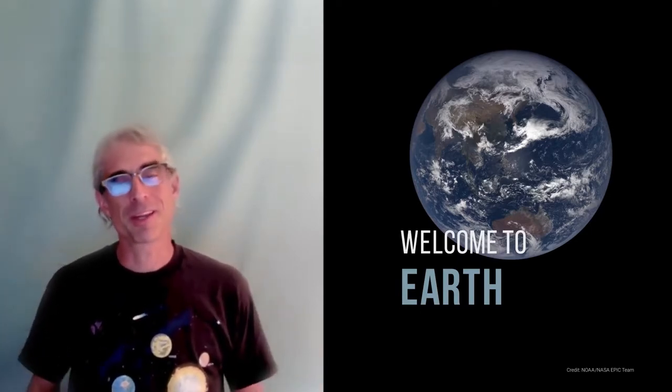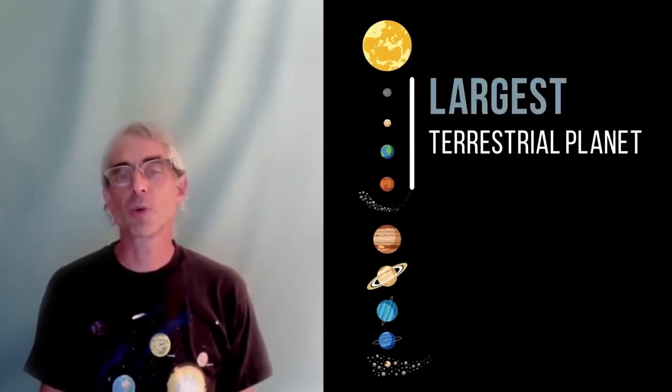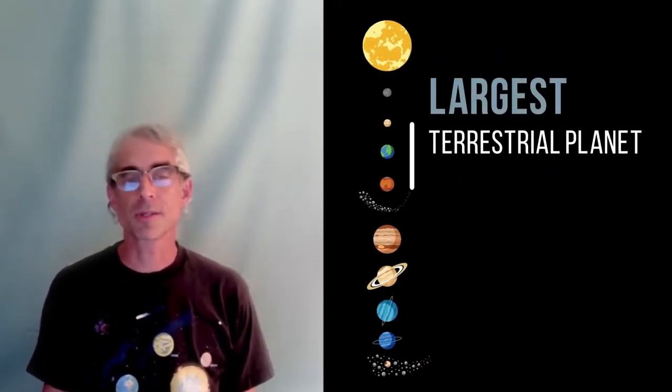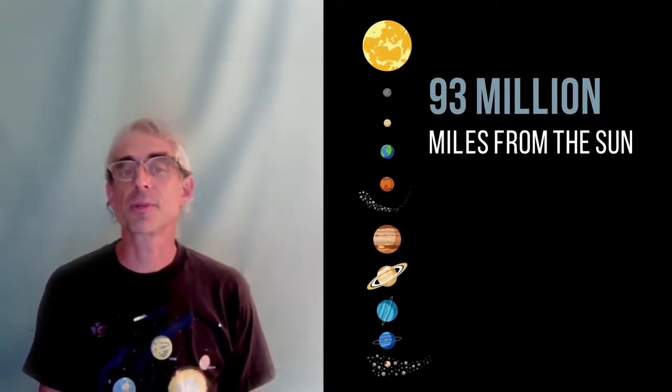It's our beautiful home planet in the solar system. Earth is the third planet from the Sun. It is the largest of the four terrestrial or rocky planets in our solar system. It's 93 million miles from the Sun.